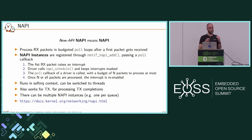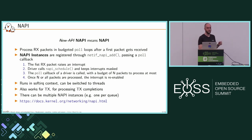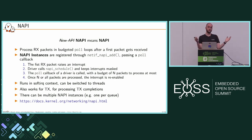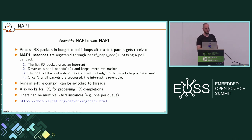NAPI is not batch processing — that would require waiting for N packets before processing. For batch processing you use interrupt coalescing at the hardware level, where the controller holds packets before notifying you. NAPI is simply about avoiding interrupt interference. NAPI also works with TX: in the polling loop you can process completions for transmitted packets. With multiple queues, especially multiple receive queues, you can have one NAPI instance per queue for more control.